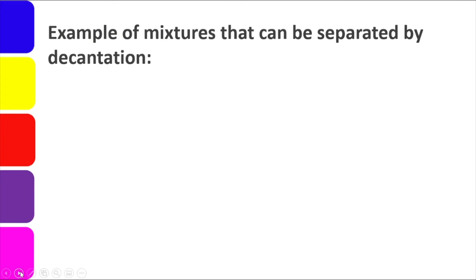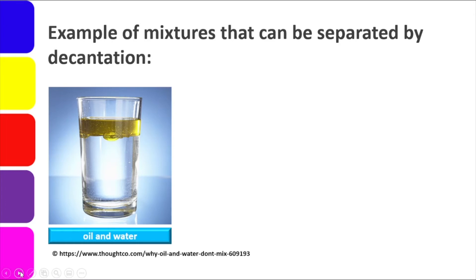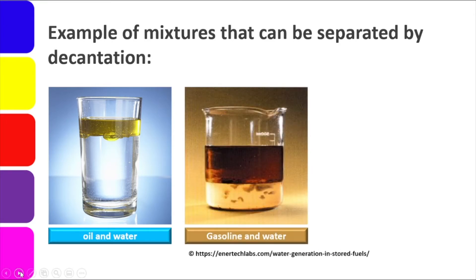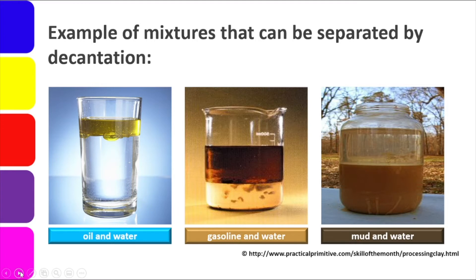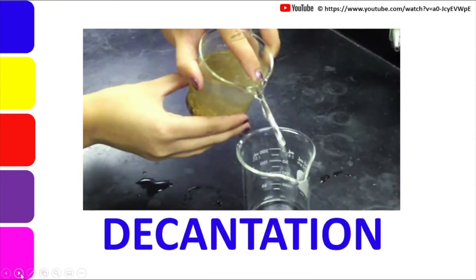Examples of mixtures that can be separated by decantation are: oil and water, because they are immiscible liquids; gasoline and water, because gasoline and water do not mix — one goes to the top, the other to the bottom, and you can pour one out into a different container; and mud and water, because even though it is muddy at first, the more dense material — the soil or mud — will sink and the water will remain on top, allowing you to decant or pour out the water. That is all about decantation — it is the method of pouring out one part of the mixture.